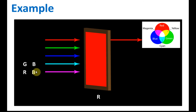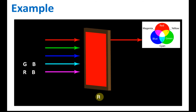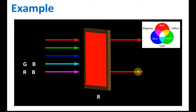What about magenta? Magenta is the combination of red and blue. The blue color will be blocked, however the red color will be allowed to pass through because it is a red filter. So the red color light will be allowed to pass through.